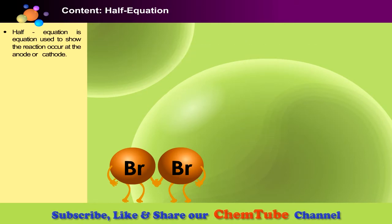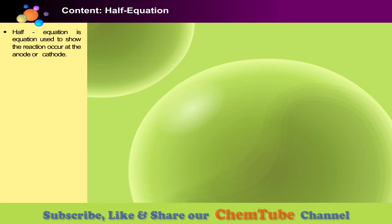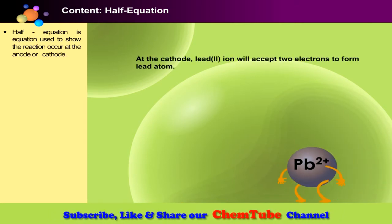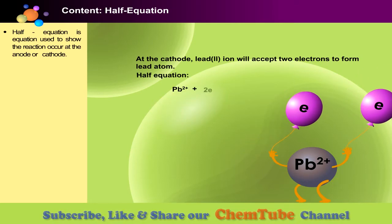Now, let's write a half-equation for ions at the cathode. At the cathode, lead(II) ion will accept two electrons to form lead atom. The half-equation at the cathode looks like this.